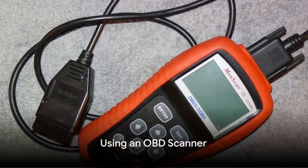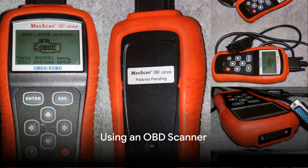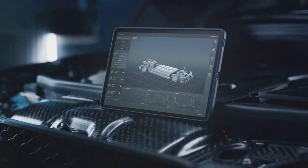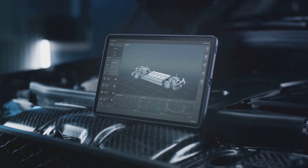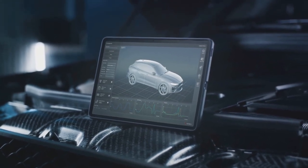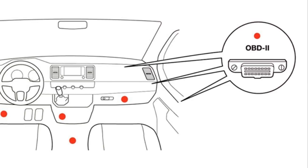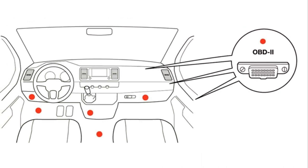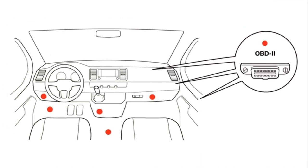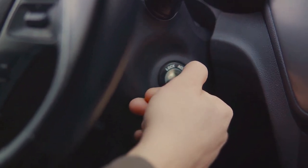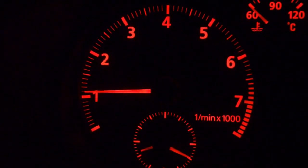If you're interested in performing your own diagnostics, the first step is to get an OBD scanner. These devices range from simple code readers to advanced scanners with extensive diagnostic capabilities. Once you've got your scanner, find your OBD port and plug in the scanner. Turn on your car's ignition to power the scanner — some scanners might require the engine to be running.